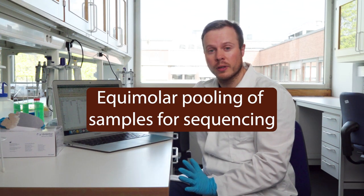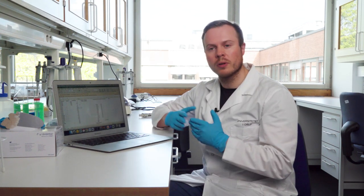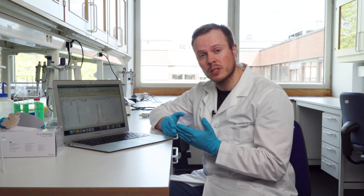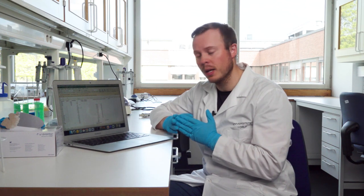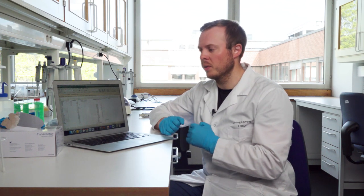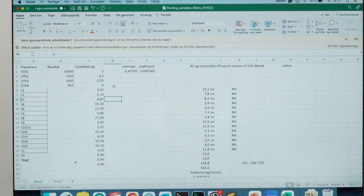So now we have run the PicoGreen, gotten the results, imported them into an Excel sheet, and here we kind of get the values we need for the pooling.